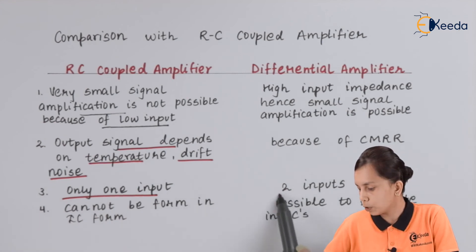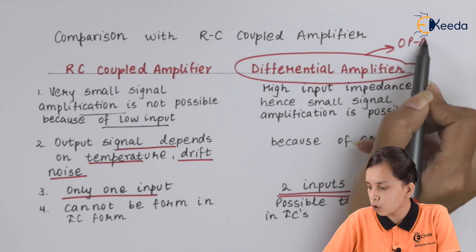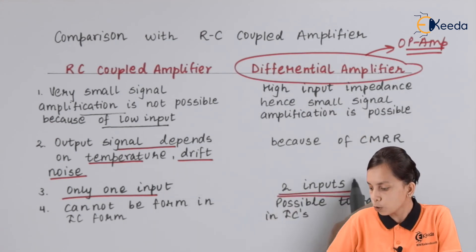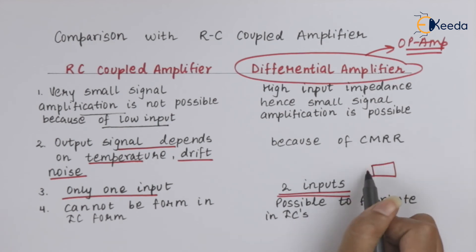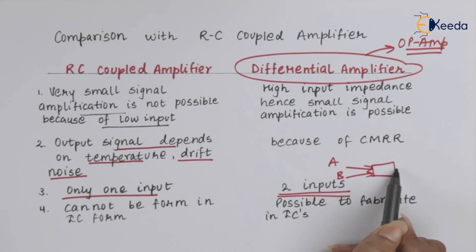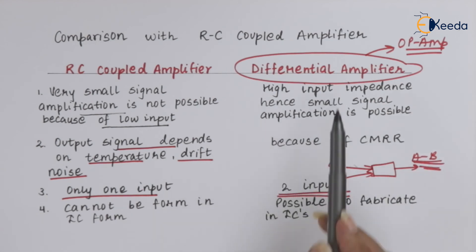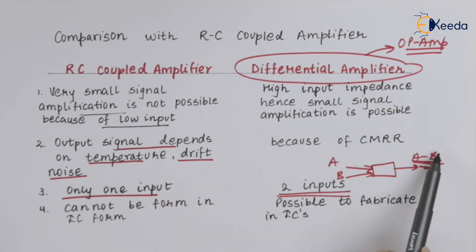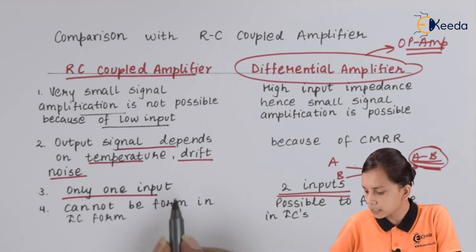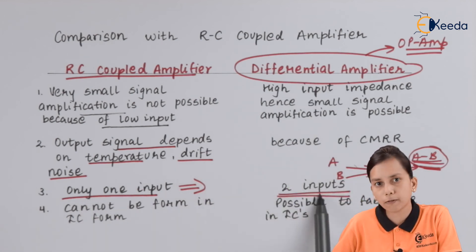Third point: RC coupled amplifier has only one input, whereas op-amp has two inputs. When we talk about a differential amplifier, we are talking about op-amp. It consists of two inputs — let's say A and B. Whatever output we get is in the form of A minus B, meaning it amplifies the difference between the two input signals. That is why it is called a differential amplifier. RC coupled amplifier, on the other hand, consists of only one input.